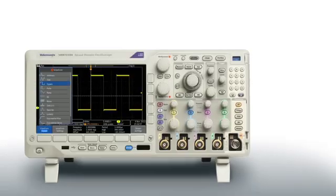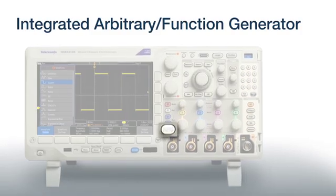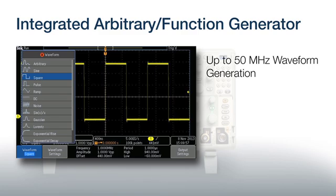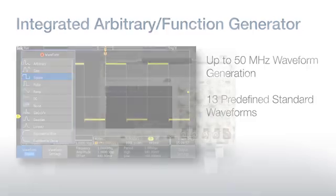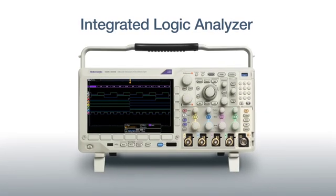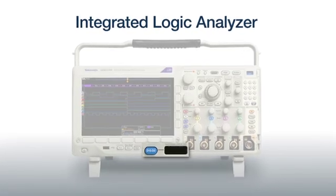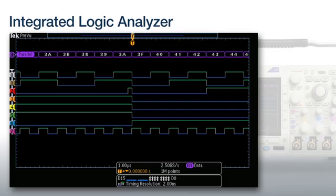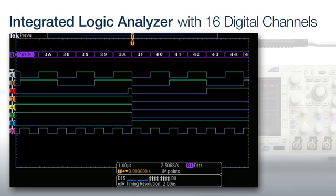Add the integrated arbitrary function generator to quickly and simply create a wide range of signal types right on your oscilloscope. If you need to test buses or other digital logic, the optional Logic Analyzer adds 16 digital channels, so you can look at many points in your design at once.